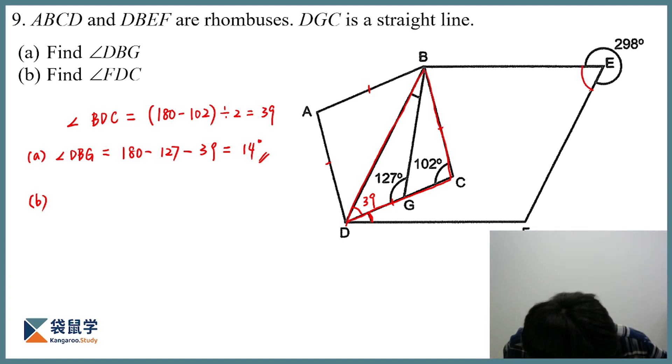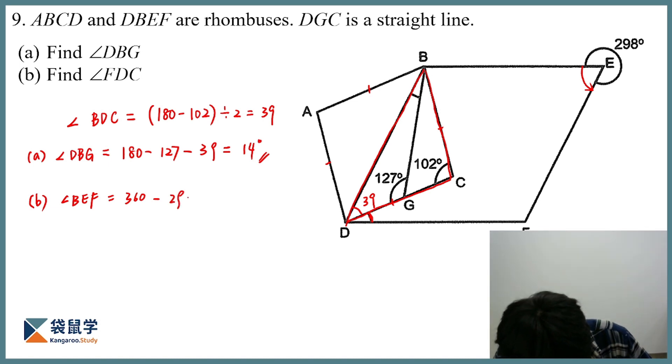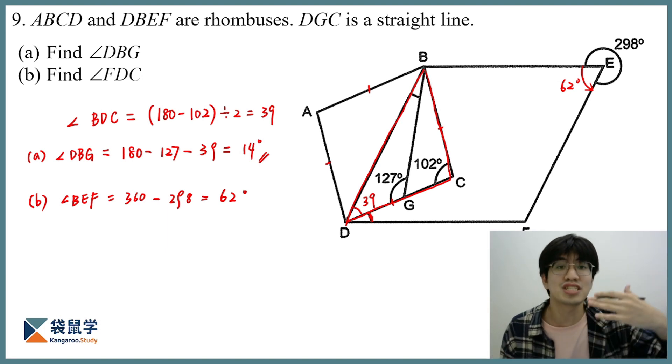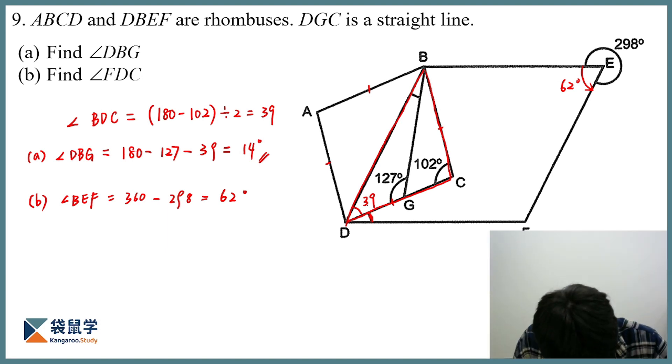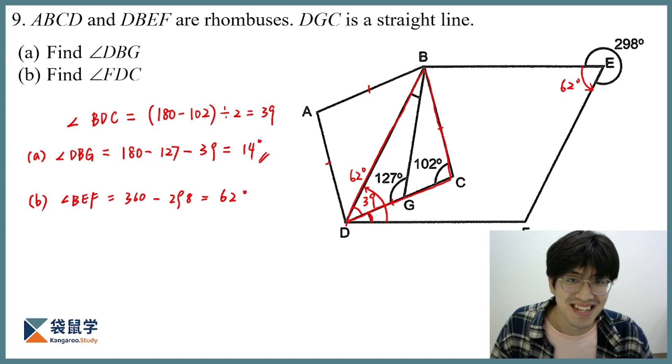So, the angle BEF is nothing but 360 minus 298, which would simply give me 62 degrees. And if this angle is 62, then that means the opposite angle in this rhombus is also 62. So, that means this angle should add up to 62 degrees. So, can we find out FDC? Well, absolutely.